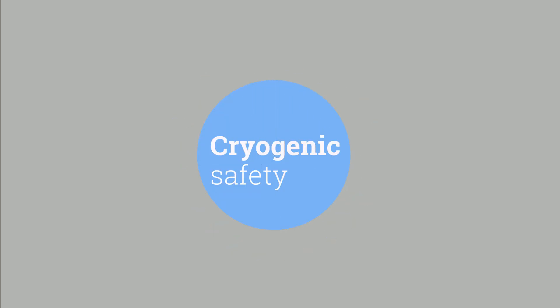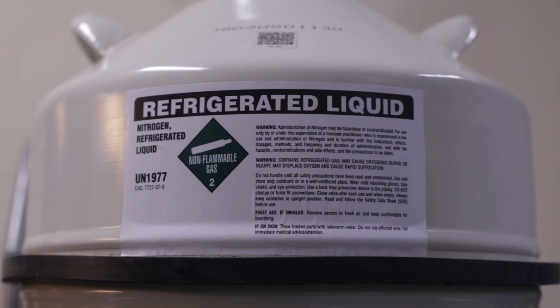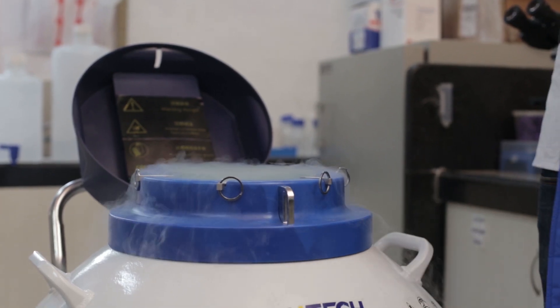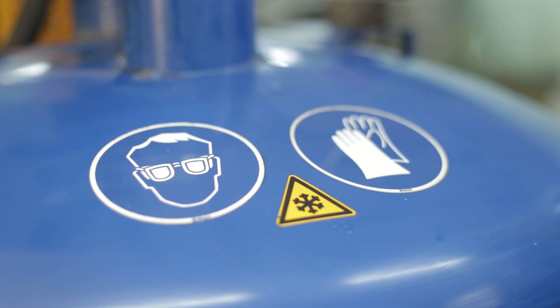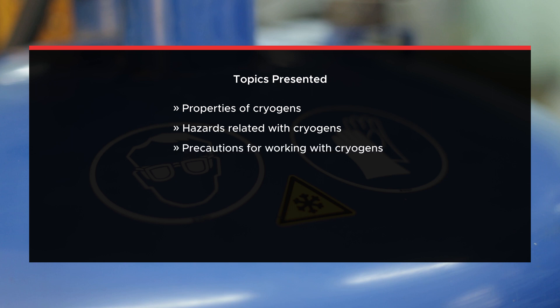Welcome to IIT Bombay, one of India's premier academic institutions. IIT has several state-of-the-art laboratories, and safety is a priority for us, so we have made a series of videos highlighting how to be safe. This video is about cryogenic safety. Cryogenics is the science of low temperatures. Cryogenic liquids — liquid nitrogen and liquid helium — are widely used in research laboratories. Researchers handling cryogens must be aware of the risks in order to ensure safe handling and storage. In this video we present the following topics: properties of cryogens, hazards related with cryogens, and precautions for working with cryogens.